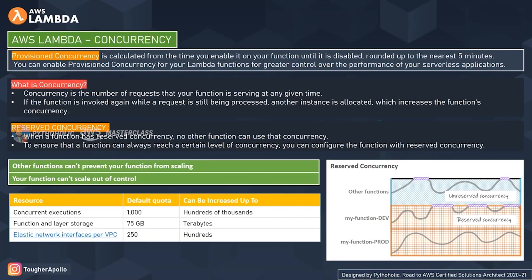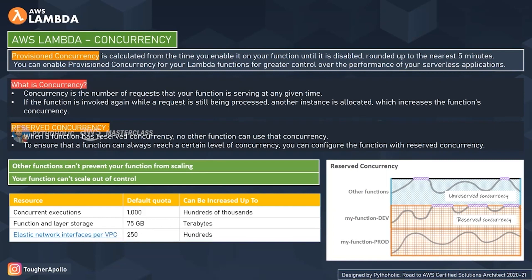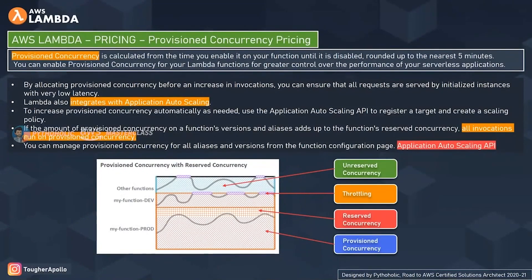A problem arises when most concurrency is reserved: the remaining pool of requests will face higher latency if other functions take more time to initialize — for example, if loading time for SDKs and dependencies is high. Other users trying to use the rest of the functions will face a lot of latency, and this is one of the main reasons we have provisioned concurrency.